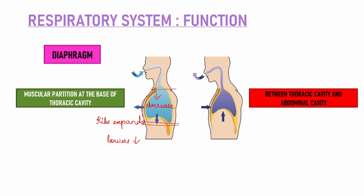Now what will happen in the exhalation process? In the exhalation process, when ribs come to the original position and diaphragm moves upwards — diaphragm moves upwards — so what happens is there is an increase in pressure inside this area, and because of which lungs ke andar jo carbon dioxide filled up hai, it is thrown out of the body through the nose. So diaphragm ka movement is very essential in our breathing activity. Diaphragm upar niche alternatively move karta hai — that is how we can inhale and exhale. These were the functions of different parts involved in our respiratory system.